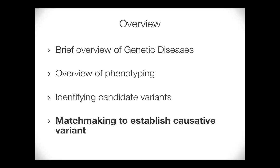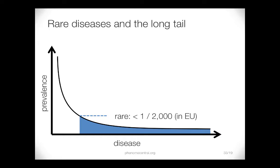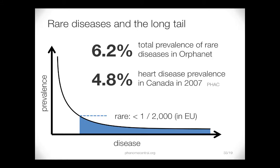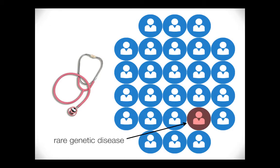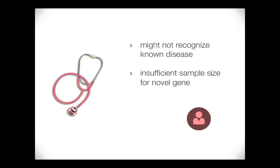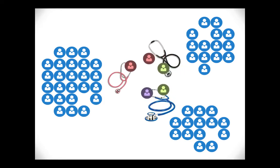The last thing I want to talk about is matchmaking. How do we identify all of these extra families? With rare diseases, there are anywhere between 7,000 and 14,000 rare diseases in the world — a lot of them have very few patients. But all together, rare diseases are pretty common; we think that about 5% of people will develop some kind of rare disease over their lifetime. When a clinician sees a patient with a rare disease, they might not recognize a known disease just because they don't have experience with it, or they have only the first patient where they've identified a new gene and want to find others. The key is to share the data.